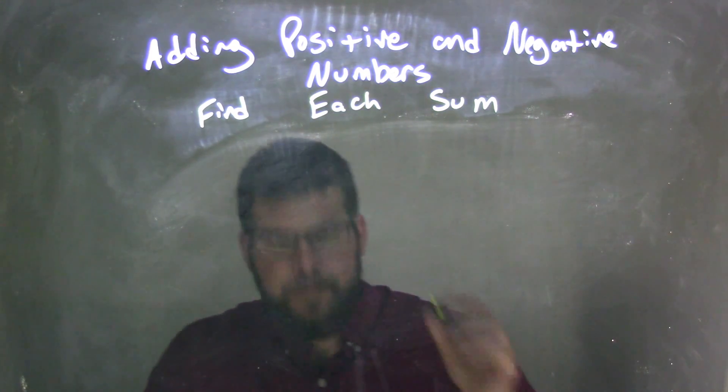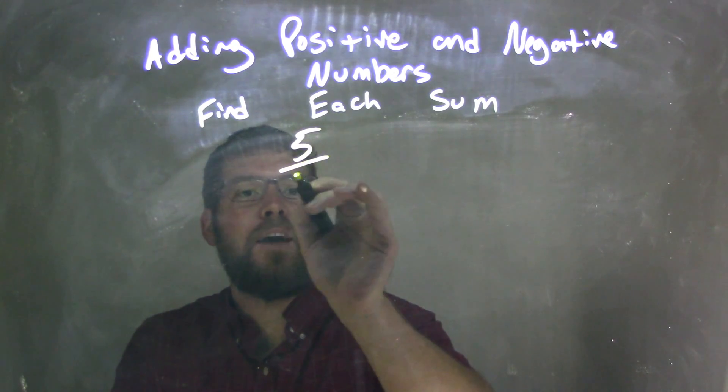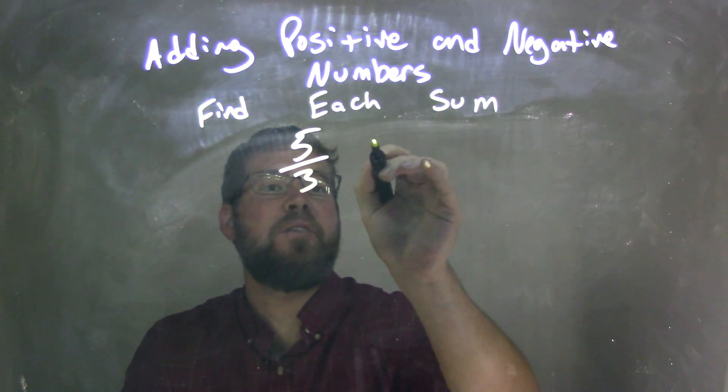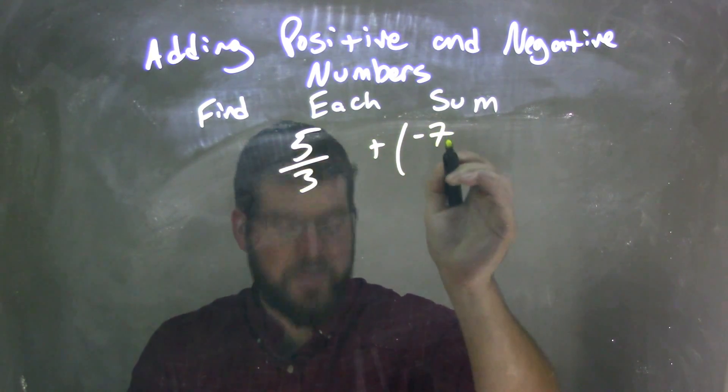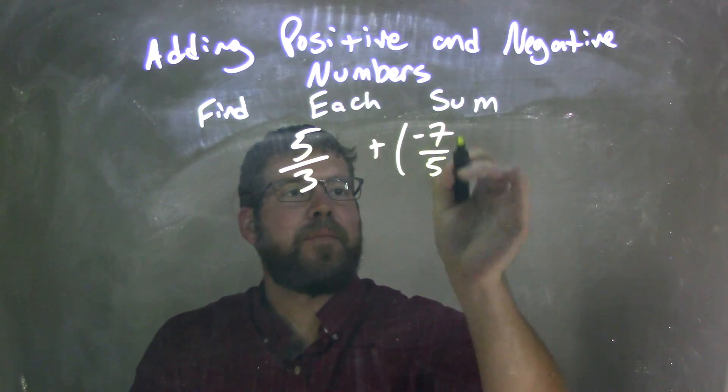Now, this one's tricky. There's a fraction here. We have 5 thirds plus a negative 7 fifths.